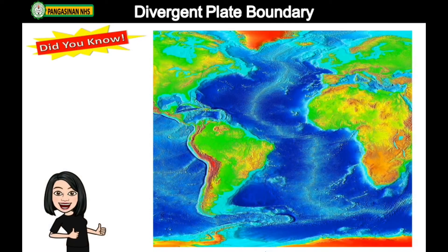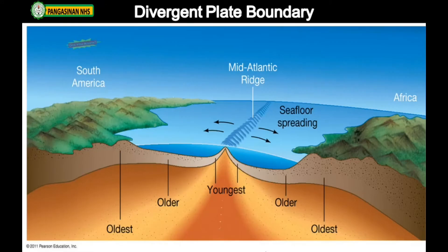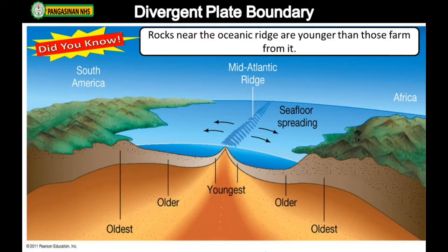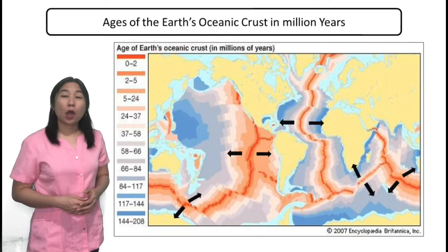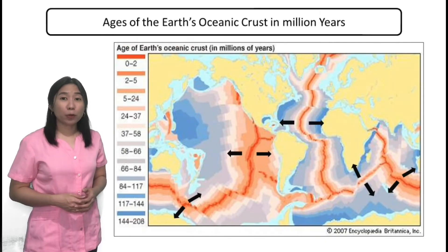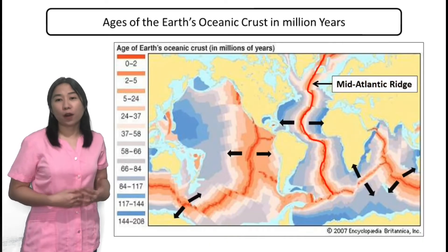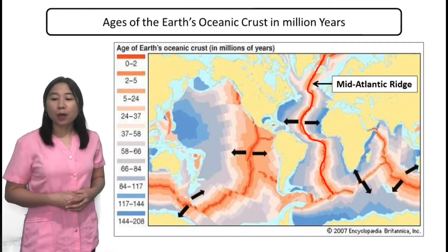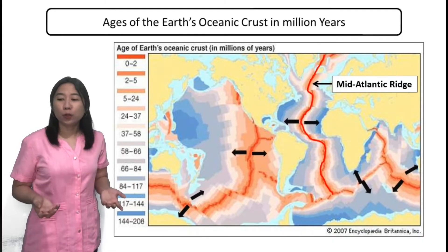Did you know? The Mid-Atlantic Ridge is a mid-ocean ridge located along the floor of the Atlantic Ocean and part of the longest mountain range in the world. Also, rocks near the oceanic ridge are younger than those far from it. This map shows the ages of the Earth's oceanic crust in million years — red means the youngest oceanic rocks and blue means the oldest. That's why divergent plate boundary is also known as constructive plate margins, because it's where new materials are being formed.